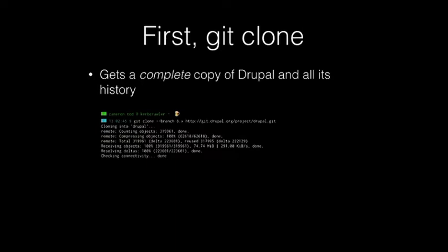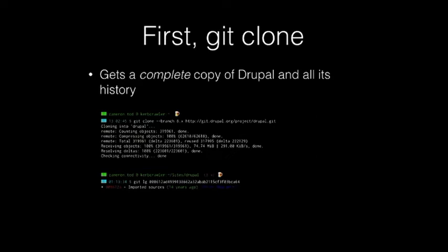All of the commands in Git work in the same format: you've got the git command, then a secondary command which is an action, and then any arguments come after that. In this case, I'm asking git to do a clone, giving it the 8.x branch because I want to work on Drupal 8, and this is the repository I want cloned locally. It downloads a blob of binary data in objects — it'll take a while depending on your internet connection, but you get a complete copy. You can even find the earliest commit from 14 years ago, which is Dries's very first commit to Drupal, and actually check out and install that copy.